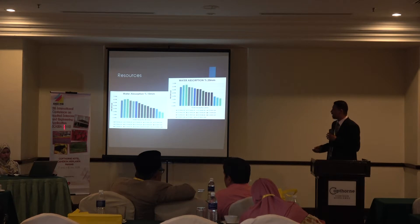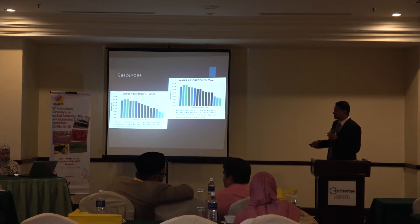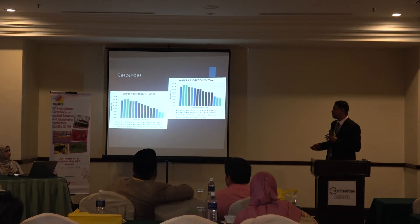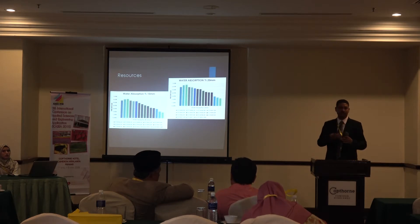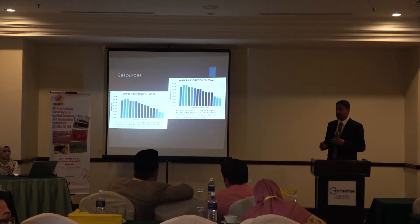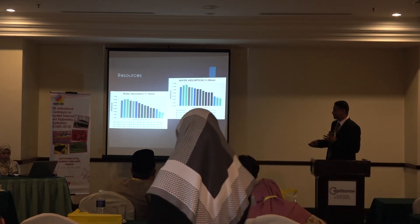This is the water absorption result. Here is water absorption for 10 mm and 20 mm aggregate, and we can see a lot of improvement. This is the natural aggregate. In terms of water absorption, the relationship is a bit different — we call it a positive relationship. The nature of recycled aggregate is that the old cement paste on the surface has a lot of pores. When we use hydrochloric acid to remove that, the number of pores decreases. This is before treatment, and after treatment the pore count reduces. This is the natural aggregate with fewer pores.